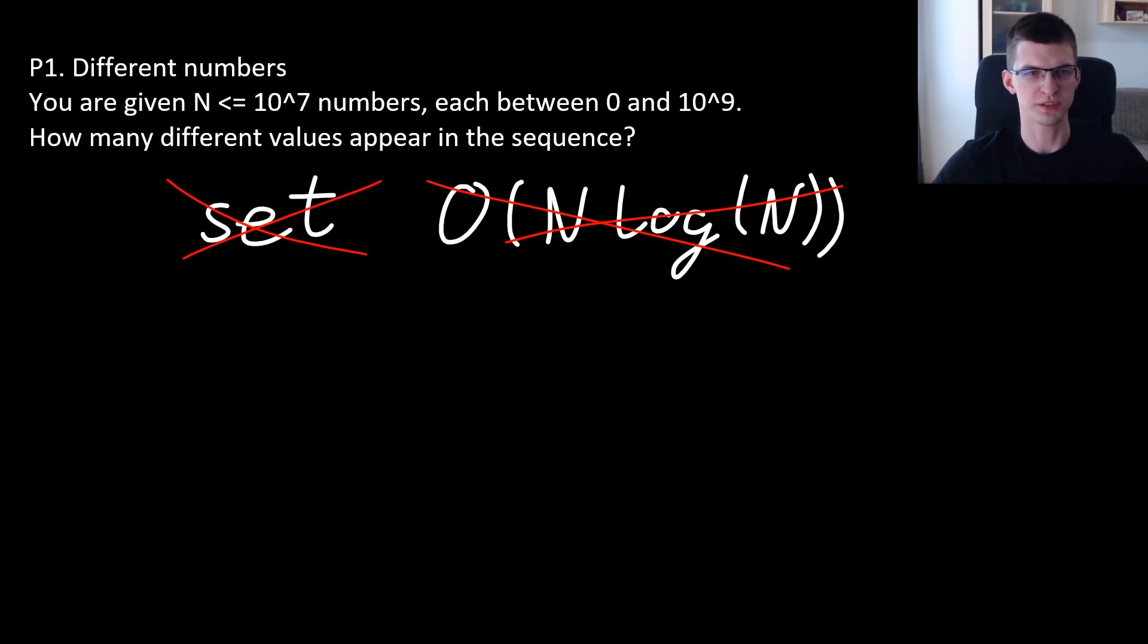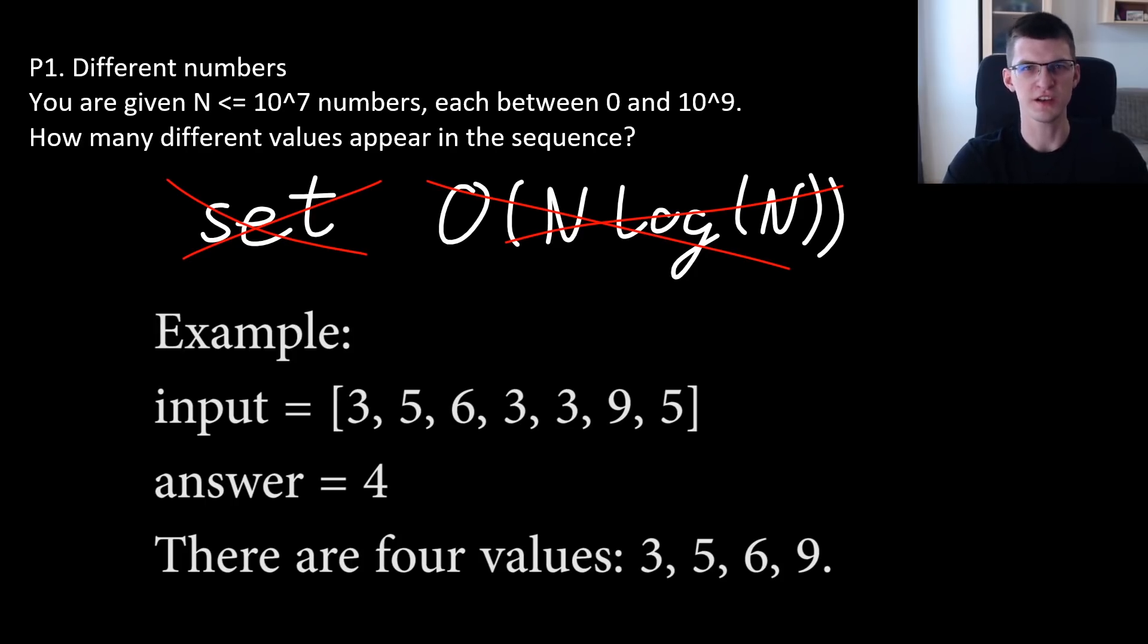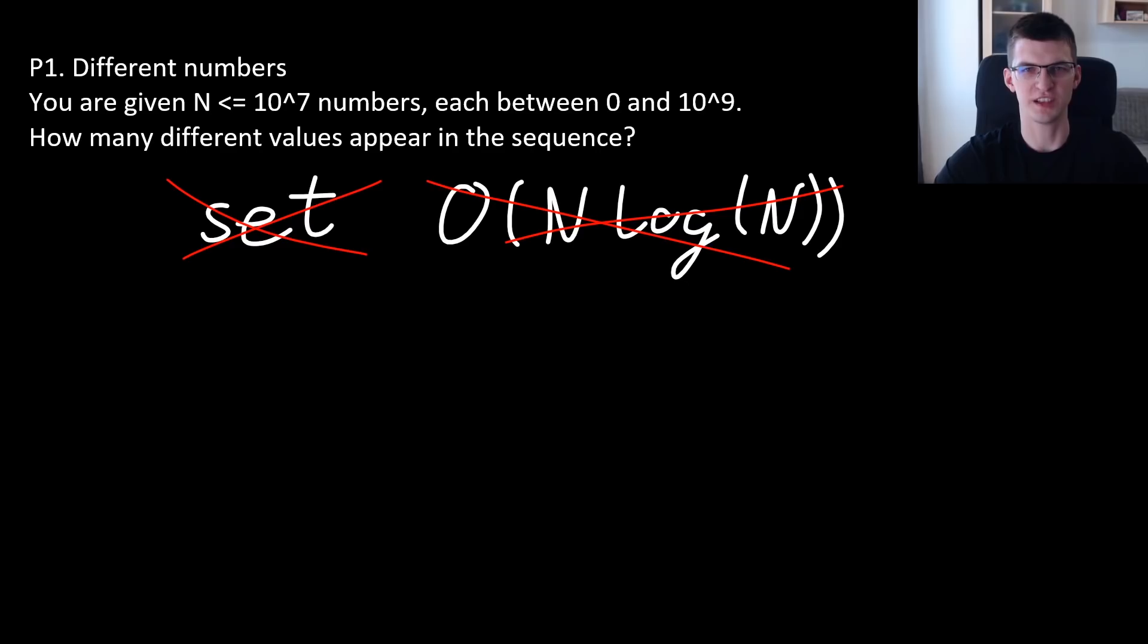Let's solve some problems. First, different numbers: you're given up to 10 million numbers, each is between 0 and billion, all are integers. How many different values are there? We could put everything into a set and just then print set.size, but it will be too slow. It is N log N and let's say time limit is tight enough that it will not pass. Unordered set is also quite slow even though it's O(N) expected. But let's try to find something faster. Take a moment now to solve this easy problem with bitsets.